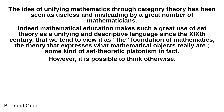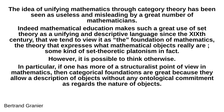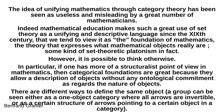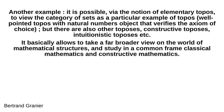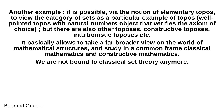However, it is possible to think otherwise. In particular, if one has more of a structuralist point of view in mathematics, then categorical foundations are great because they allow a description of objects without any ontological commitment as regards the nature of objects. There are different ways to define the same object. A group can be seen either as a one-object category where all arrows are invertible, or as a certain structure of arrows pointing to a certain object in a category. Via the notion of elementary topos, it is possible to view the category of sets as a particular example of a topos — a well-pointed topos with natural numbers object that verifies the axiom of choice — but there are also other toposes: constructive toposes, intuitionistic toposes, etc. It basically allows us to take a far broader view on the world of mathematical structures, and study in a common frame classical mathematics and constructive mathematics. We are not bound to classical set theory anymore.